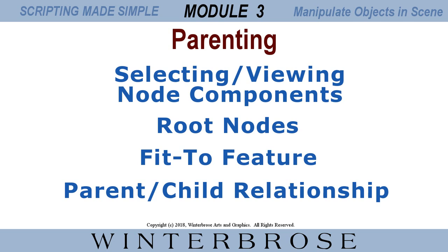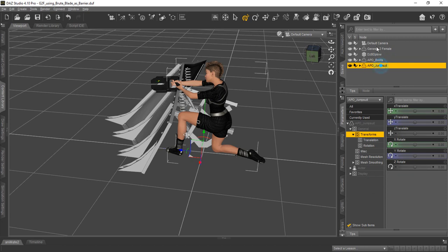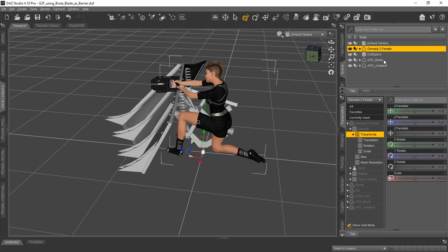In Module 3, we're going to move on to Parenting and show you how to select and view different node components in the Scene tab. We're going to teach you about Root Nodes and the Fit To feature, which as it relates to Parenting is going to suddenly make sense. We'll go over the Parent-Child relationship for nodes. You can see a female warrior scene and we'll teach you about Fit To, how things still stick together in DAZ Studio for objects joined with Fit To.